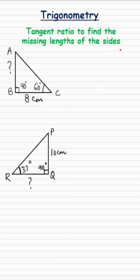Hey everyone, after sine and cosine ratio, now we will see how the tangent ratio is used to find the missing sides of a right angle triangle. In my first triangle, angle B is 90°, angle C is 60°, BC is 8, and I need to find AB. So with respect to angle C, tan 60° is the ratio of